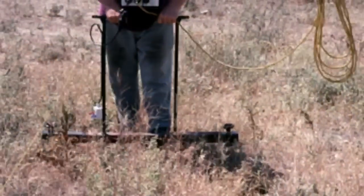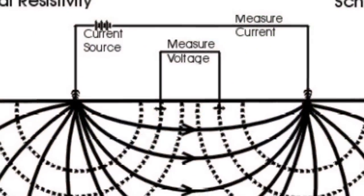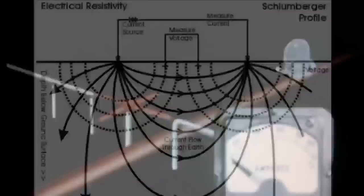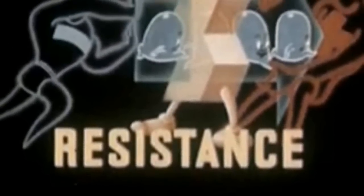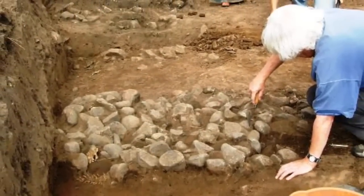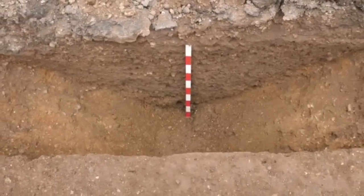Each technique is subtly different and employs a different scientific principle in order to achieve its goal. An electrical resistivity survey involves putting two prongs into the ground and passing an electrical current between the two. As the current passes through, fluctuations are measured and recorded. More or less electrons means more or less resistance, which tells us the quality of the objects. More resistance tends to mean dense objects — so a wall will put up a lot of resistance, whereas a ditch, which contains more water, will probably put up less.